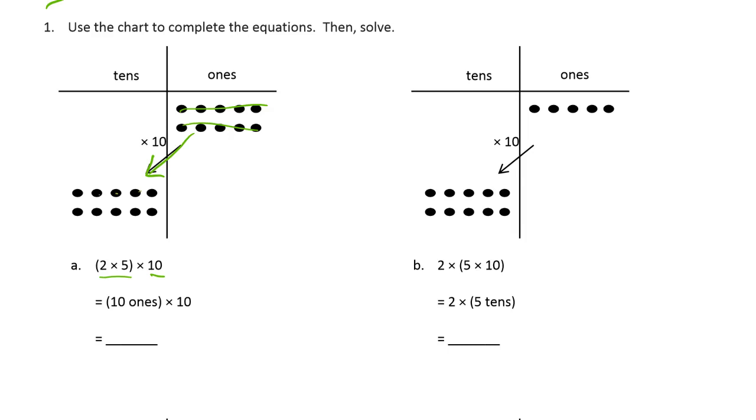And then we could just count them by tens. 10, 20, 30, 40, 50, 60, 70, 80, 90, 100. Right? So ten ones times ten. So the same as multiplying by ten. Multiplying by ten, one of the easier numbers to multiply by.